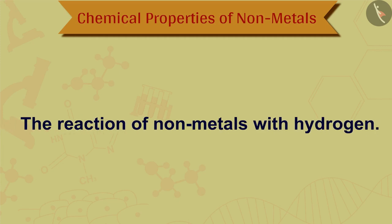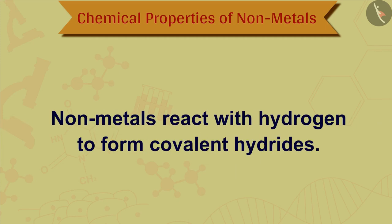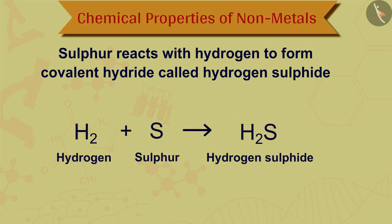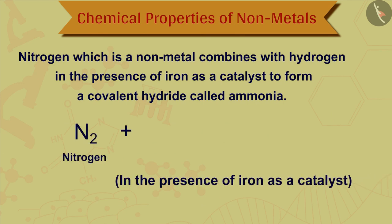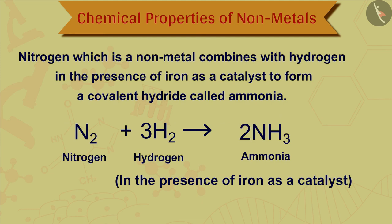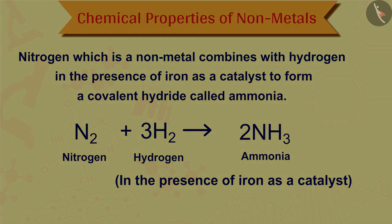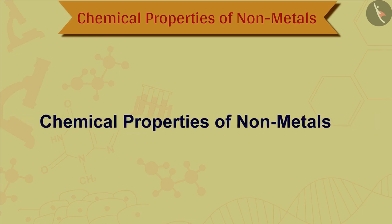The last reaction is the reaction of nonmetals with hydrogen. Nonmetals react with hydrogen to form covalent hydrides. For example, sulfur reacts with hydrogen to form hydrogen sulfide. Nitrogen, which is a nonmetal, combines with hydrogen in the presence of iron as a catalyst to form a covalent hydride called ammonia.